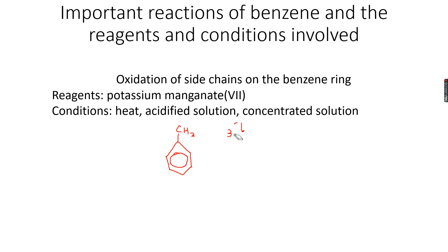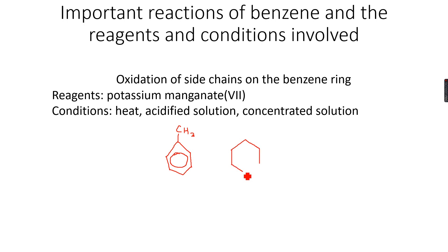Now let's move further. We can have a methyl side chain or we can have an ethyl benzene side chain. In most cases it will be an alkyl side chain when they ask you to oxidize your side chains.